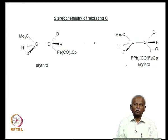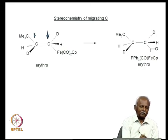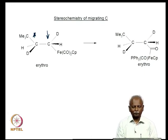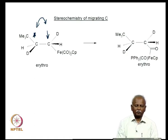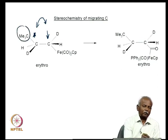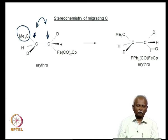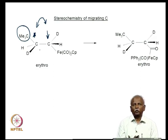In this experiment, he attached a fairly large group — a tertiary butyl group — a very large group on the carbon, so that rotation about the carbon-carbon bond would not be facile. If the carbon-carbon bond cannot be rotated, then the relationship between the two deuteriums and the two hydrogens is forced to be the same before and after migration. He took the erythro compound, which means the hydrogens were on the same side, with the large groups trans to each other.